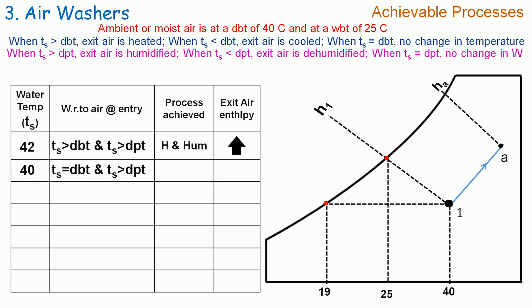Let us now reduce TS to 40°C. Here TS is equal to dry bulb temperature, hence no change in temperature of the air. And TS is greater than dew point temperature, hence air is humidified. Therefore, the achievable process by the air washer is humidification alone. If we plot it on the psychrometric chart, then process 1B will be representing it. The enthalpy HB is greater than H1, hence exit air enthalpy increases.